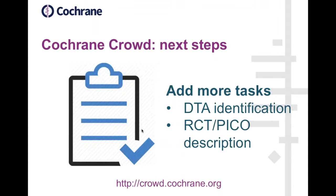We also want to roll out a task looking at PICO and trial characteristics description. On records where we're sure it's describing a randomised trial, can we also start to pull out some of the details that describe that trial? PICO stands for Population, Intervention, Comparator, and Outcomes, but we also want to capture additional characteristics — trial IDs, number of participants, and other things.